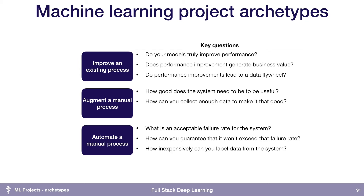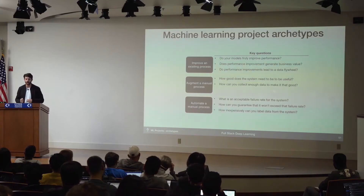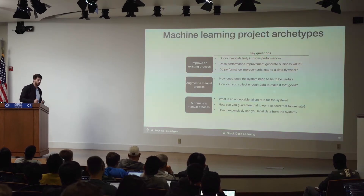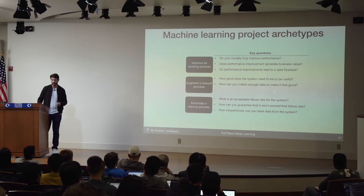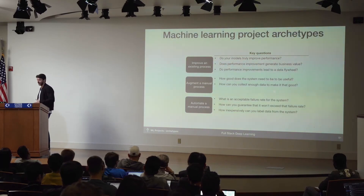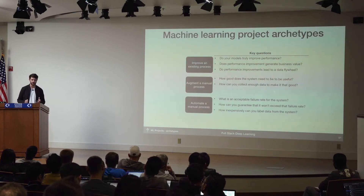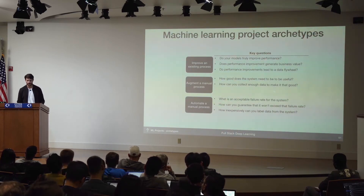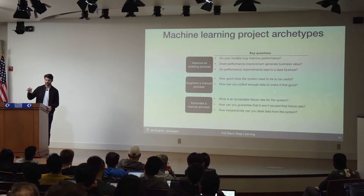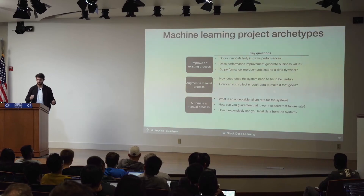The last question I would ask is: how inexpensively can you label data from that system? If you're building an automated system where predictions are going to be right or wrong but there's no automated way of telling which, then improving that system will be very difficult because you'll need to go back and manually collect and label data. In the case of a self-driving car driving with no human supervision, if it makes a mistake, you want to be very careful that you're able to collect that data so you can improve your system.